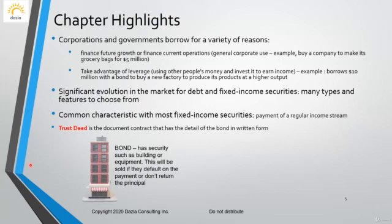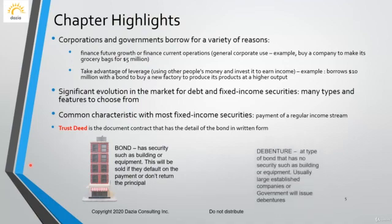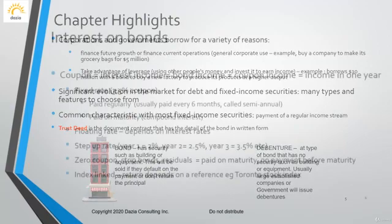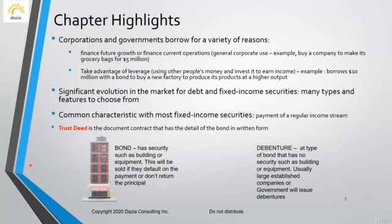If the company cannot return investors' money after five years, they would have to sell that pledged asset. So a bond has security. There is another type of fixed income security called a debenture — in a debenture there is no such security like a building. Well-established governments or companies may issue debentures without pledging any asset. That is the purpose of the debenture. We will stop here and continue in the next lecture with more detail.